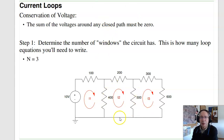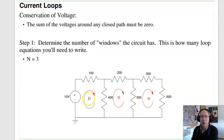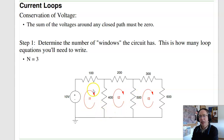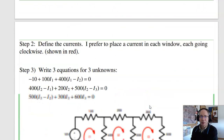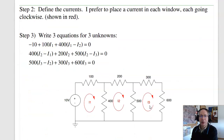Suppose I have this circuit — find the current. The first step is count how many windows I have: three. So I need three equations, three unknowns. Step two is to find the currents — I like making all currents go clockwise, so I'll have I1, I2, I3. Step three is to write n equations and unknowns.